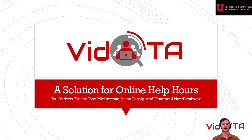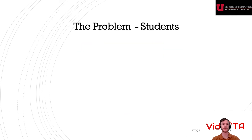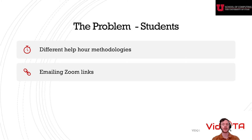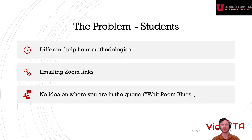Now that we've met the team, let's talk about what help hours look like when you are not able to attend in-person to talk to a TA or a professor. For students, it often means you have to learn a different methodology or use a different technology for each course. Sometimes it means you have to email a link to your TA, hope they receive it, to put you in the queue. It can also mean you have no idea how many people are in front of you or how long it's going to take to get help.